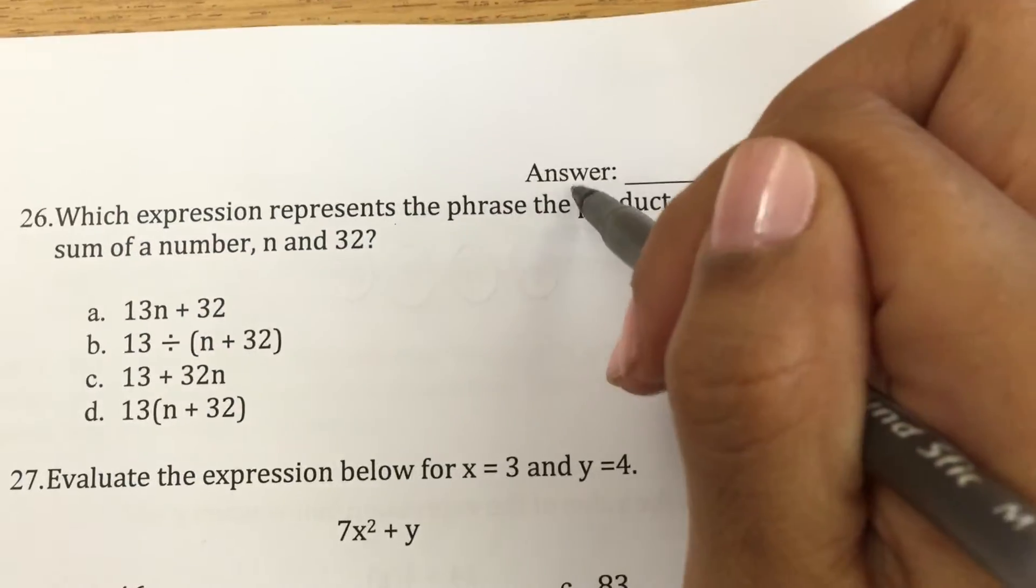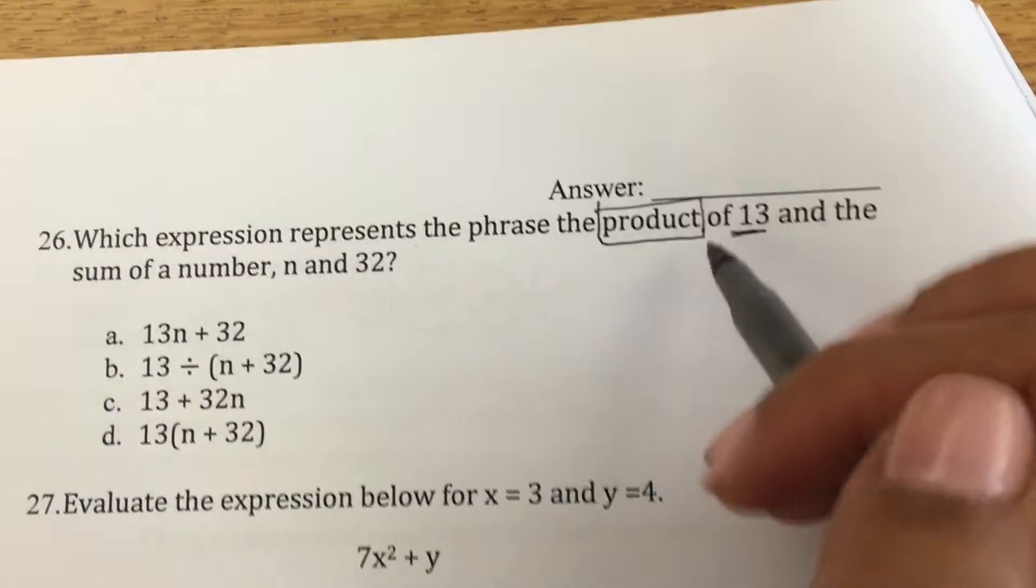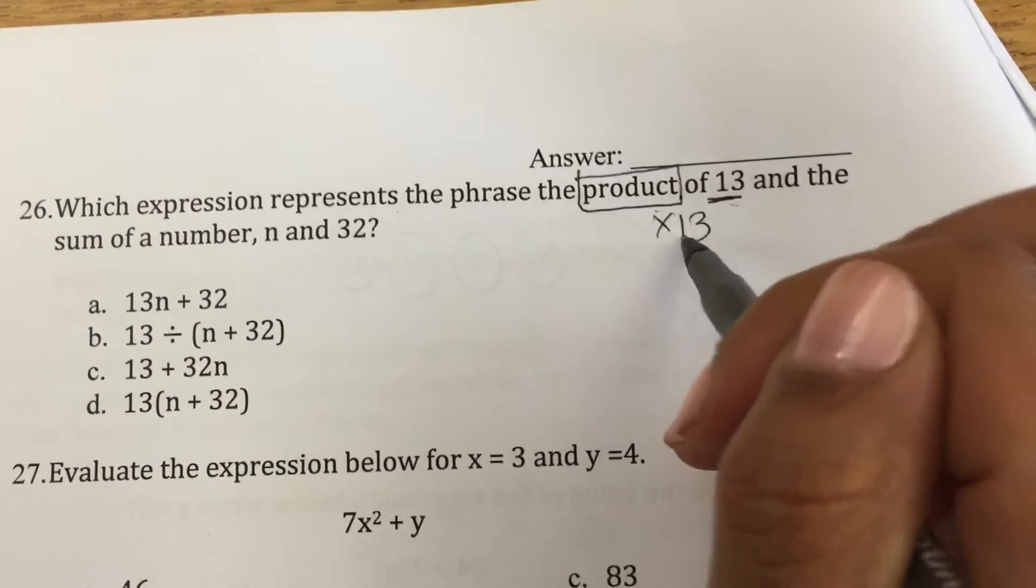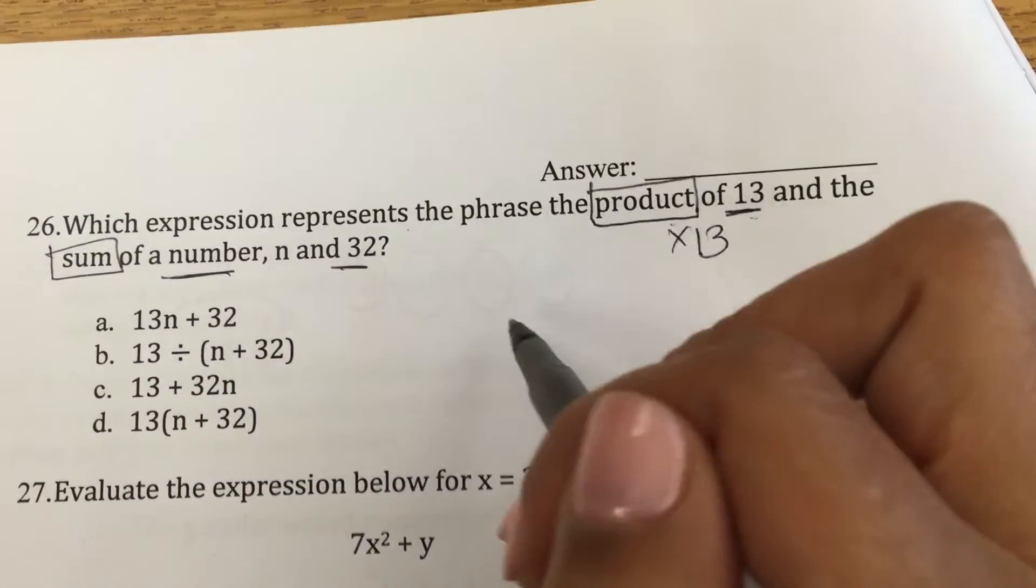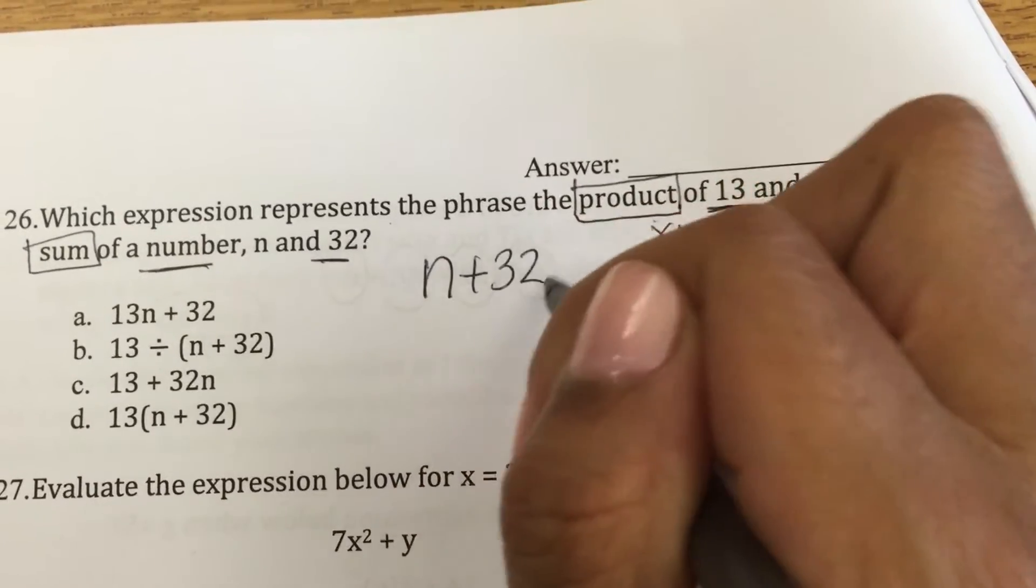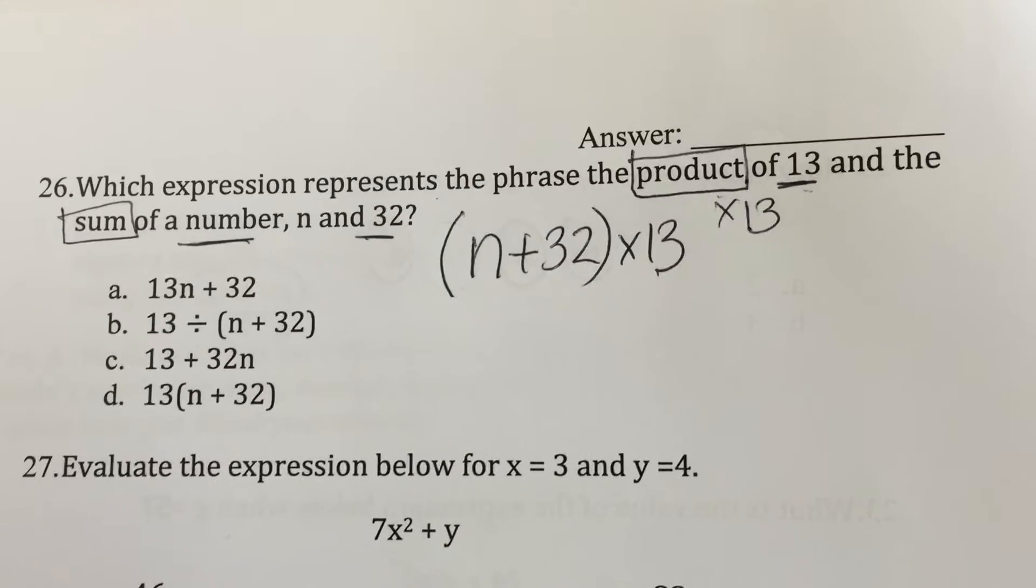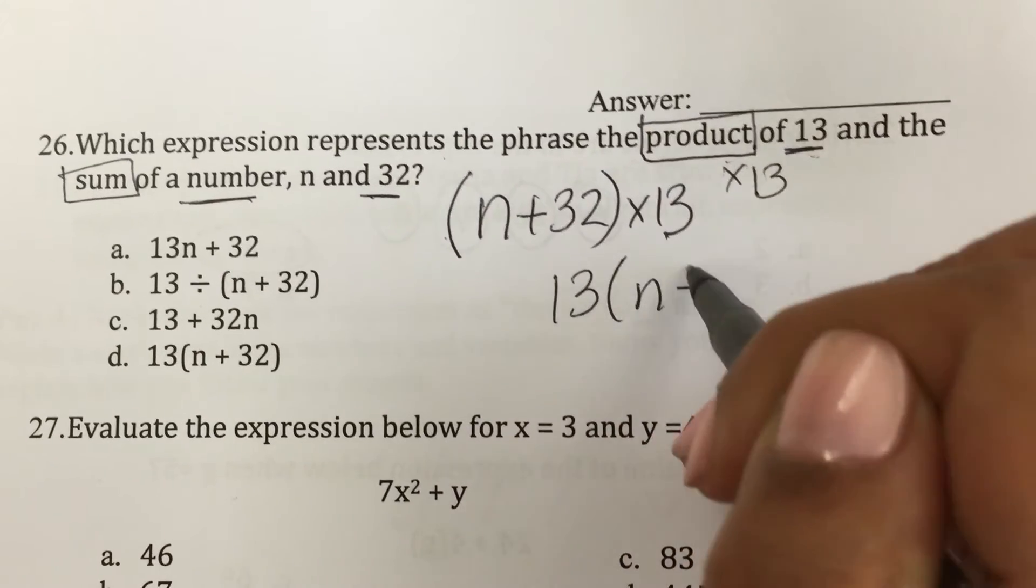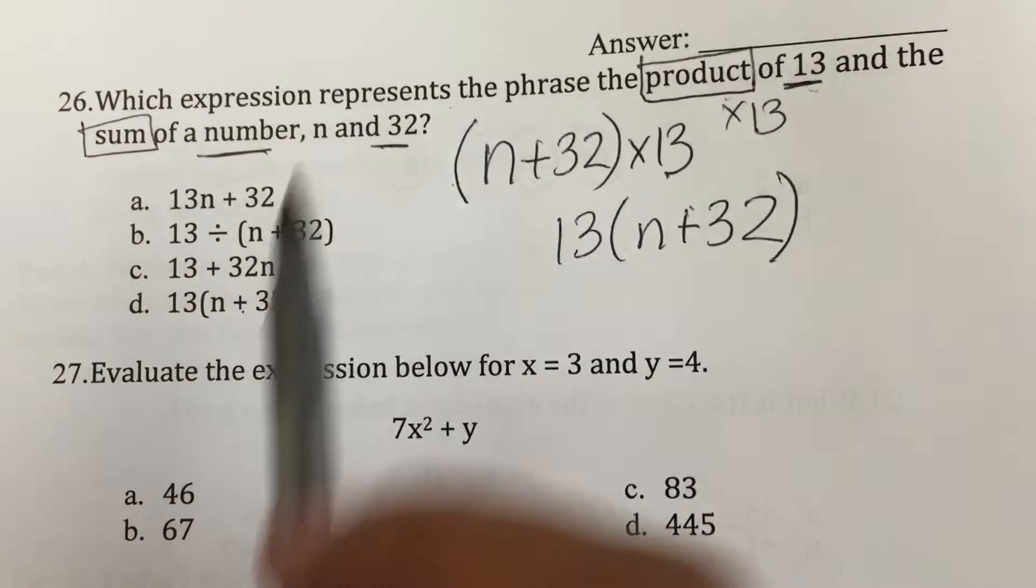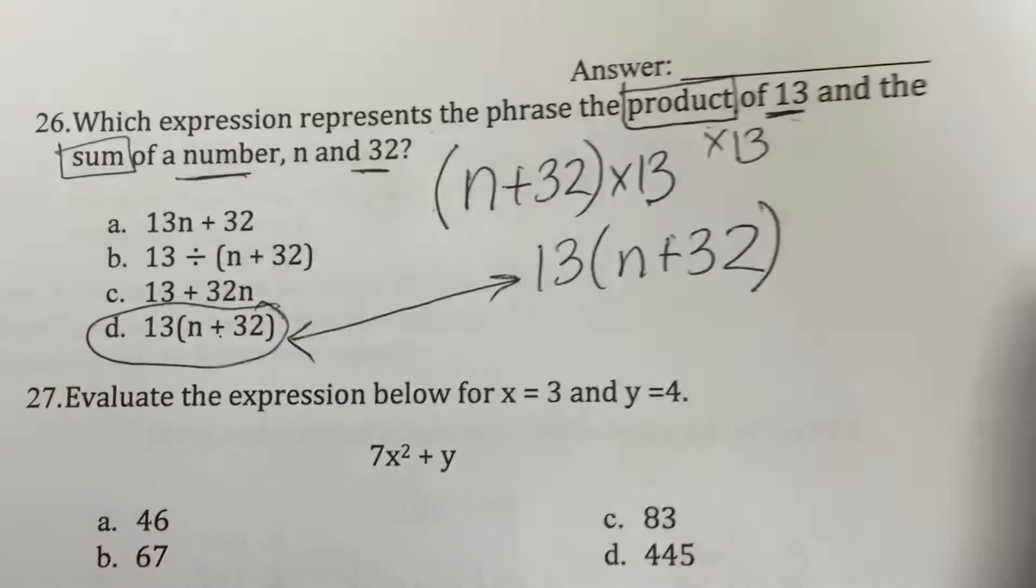So our coding. We said we mark the operation words. So product of 13. So that means it's going to be times 13. 13 times the sum of a number and 32. So that means I'm going to add a number and 32. And I'm supposed to multiply this by 13. Which one kind of shows that? I could have also had the 13 in the front and the number plus 32. And the only one that kind of matches my work, this one exactly matches my work.